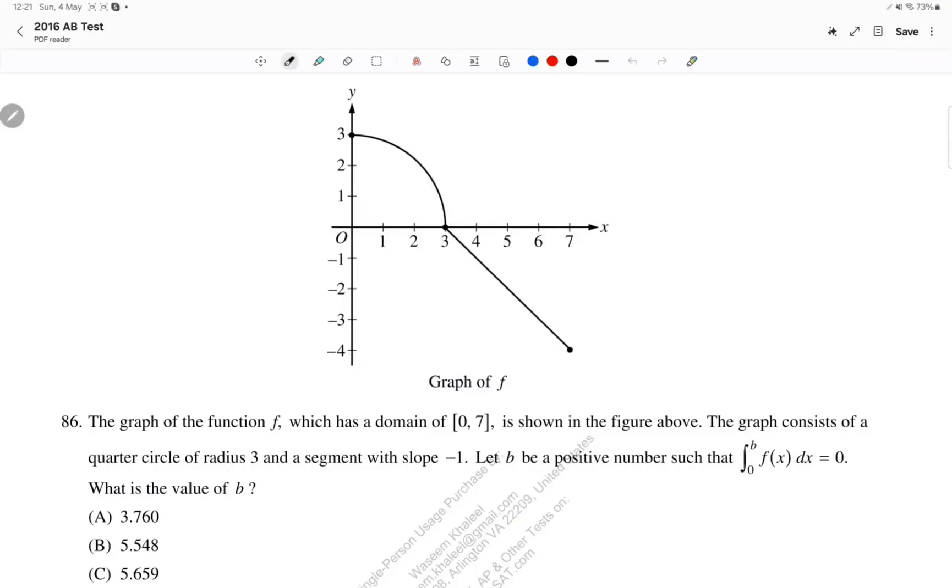We're supposed to integrate from 0 to b, and b is somewhere here, so that the area of this quarter circle and the area of this shape here cancel out. The quarter circle has a positive area, given it's above the x-axis, and this one has a negative area, given that it's below the x-axis.